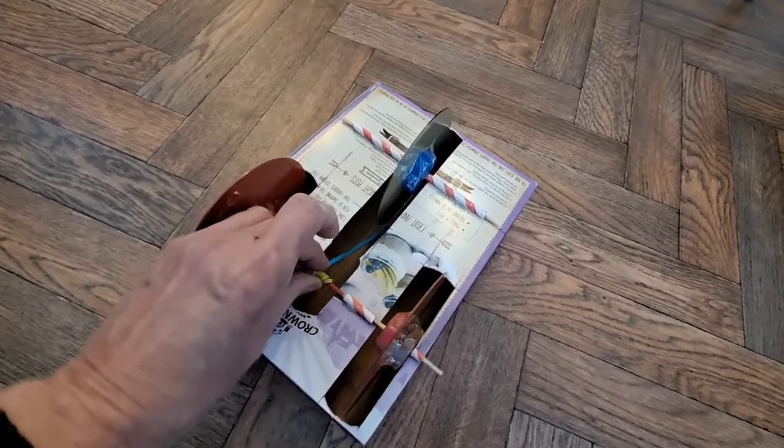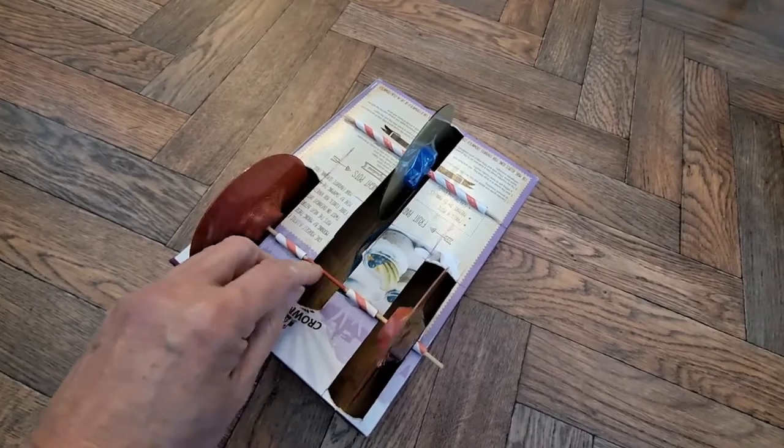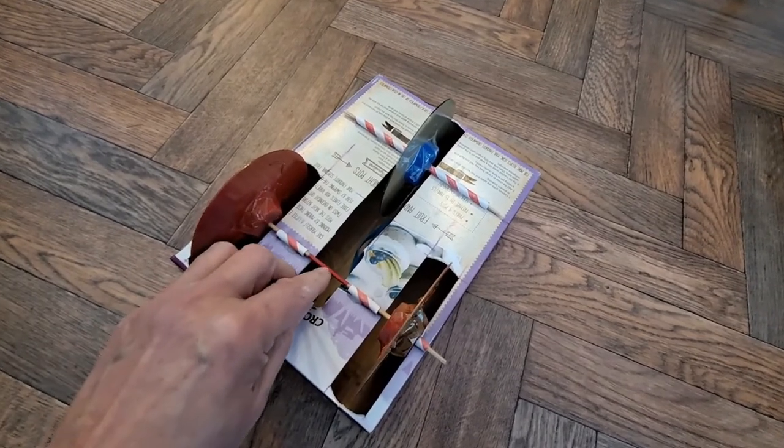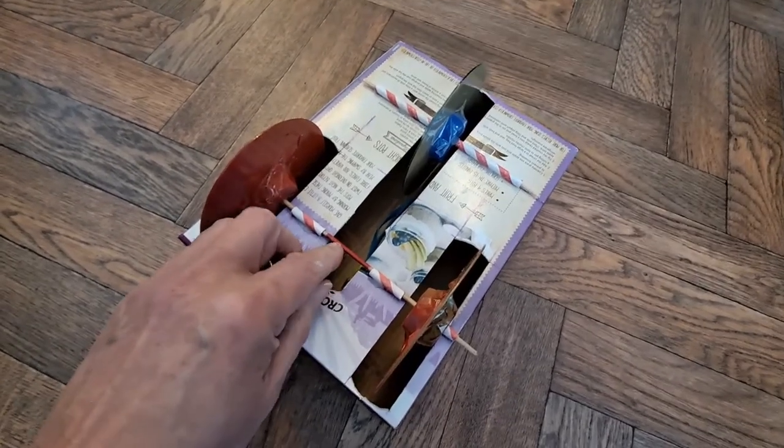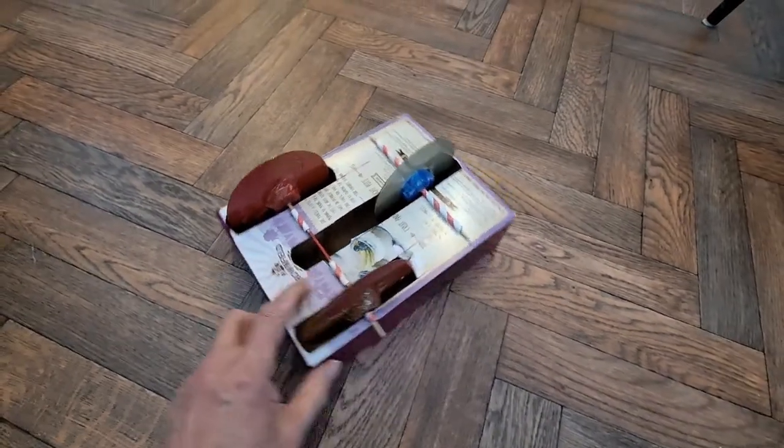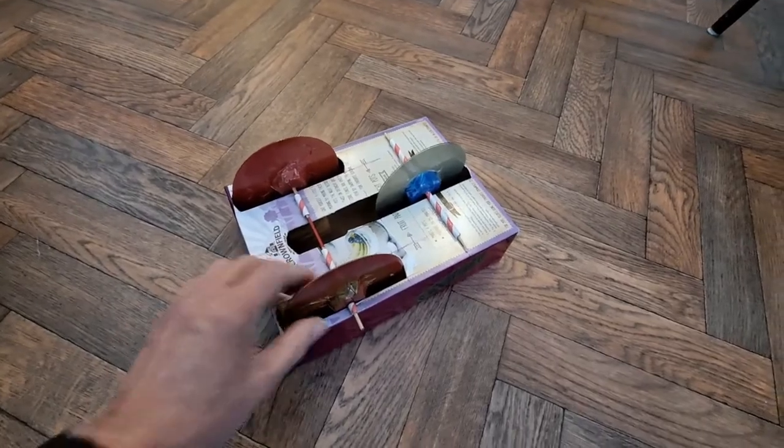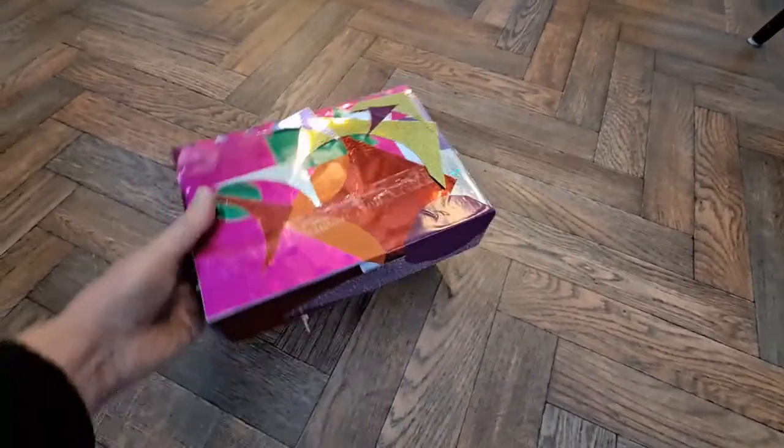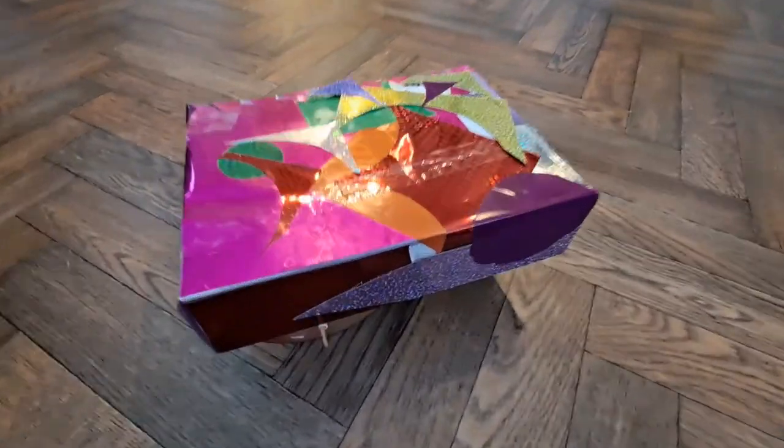But if you really want to, you could glue a little bit of barbecue skewer in a T-shape there and then you can hook the rubber band onto the T-shape. But I don't do that very often. There, job done.